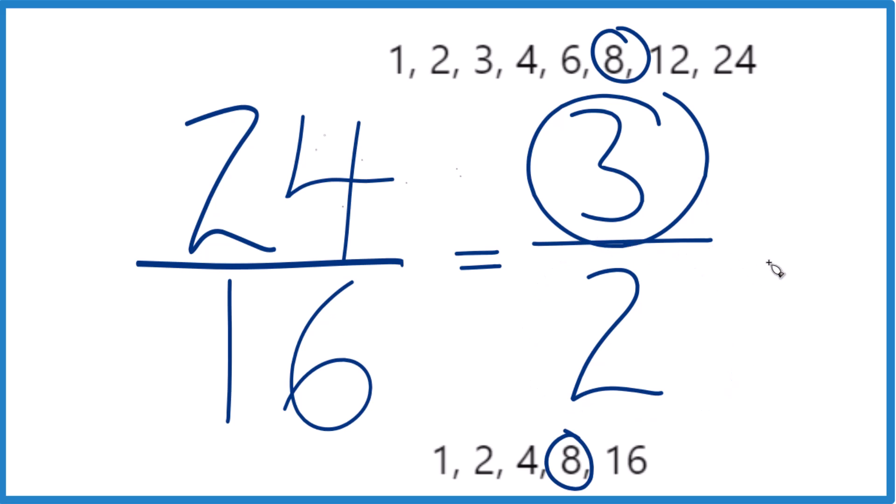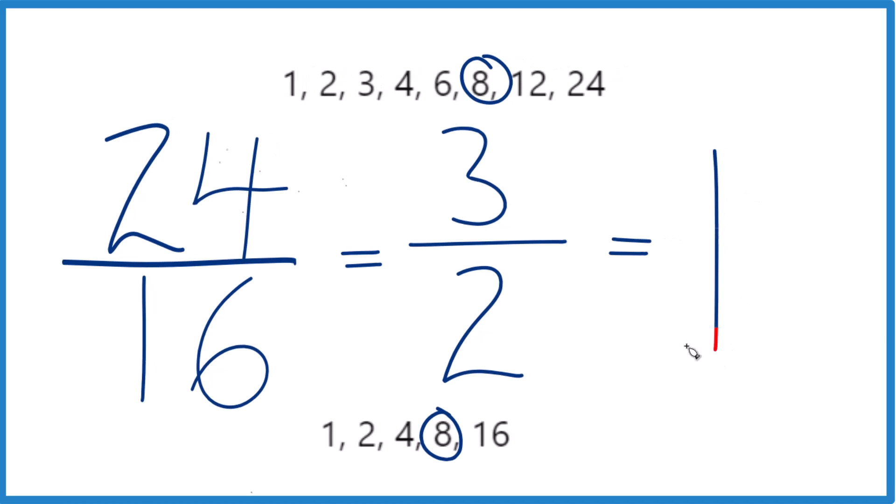We could change it to a mixed number. So 2 goes into 3, 1 times 2 is 2, and then you'd have 1 left over, bring that 2 across, and 3 over 2, you could call it 1 and 1 half.